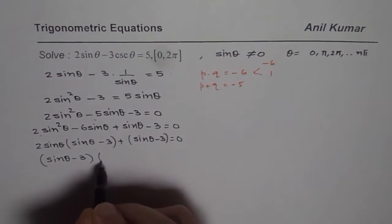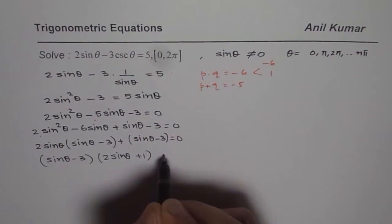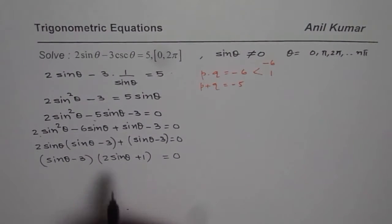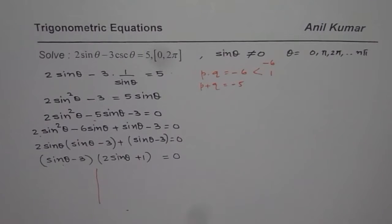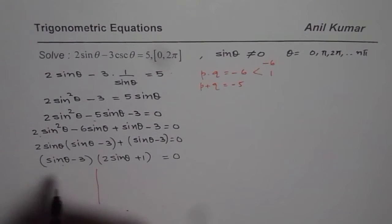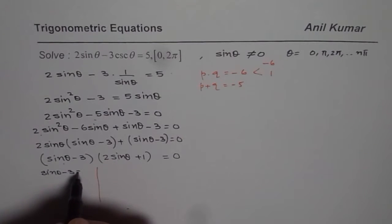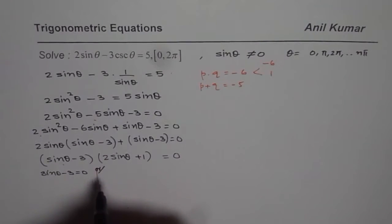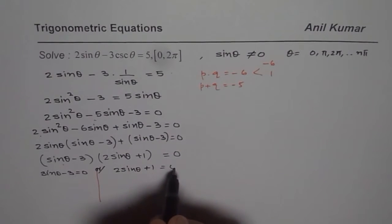So we get 2 sin theta plus 1 equals to 0. So we have sin theta minus 3 equals to 0 or we have 2 sin theta plus 1 equals to 0.